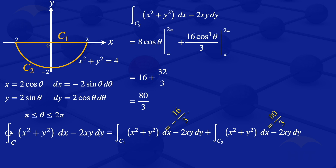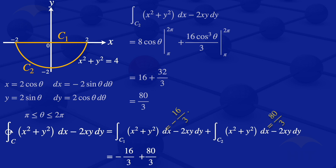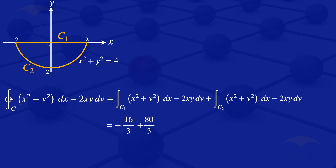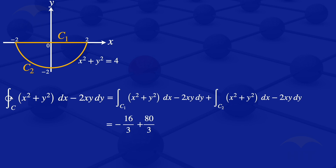For the integral along the closed curve C, we combine the two results: minus 16 over 3 plus 80 over 3. Simplifying, 80 minus 16 over 3 gives 64 over 3. So the integral along the closed curve C of x squared plus y squared dx minus 2xy dy equals 64 over 3.